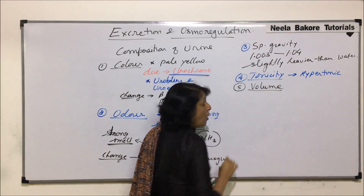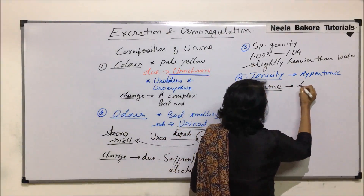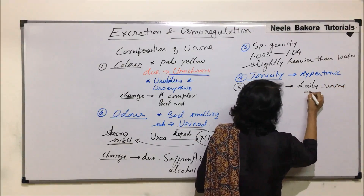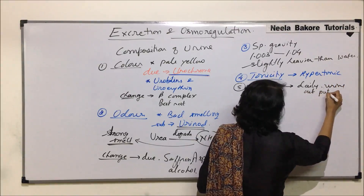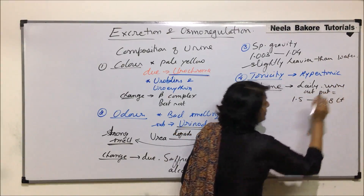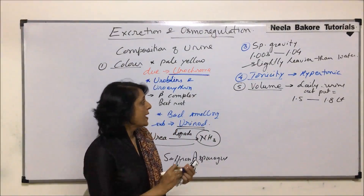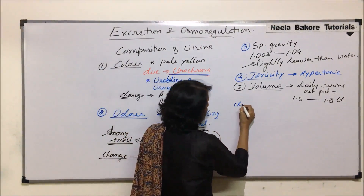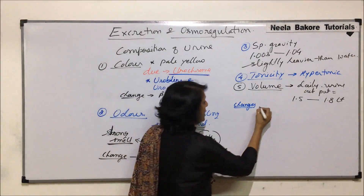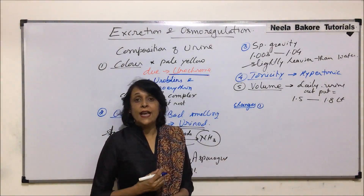The next property is the volume of urine. The normal daily urine output is 1.5 to 1.8 liters. But this volume also changes, and there are several reasons for this change in volume. One such reason is fluid intake — if fluid intake is more, the volume of urine output would be higher.